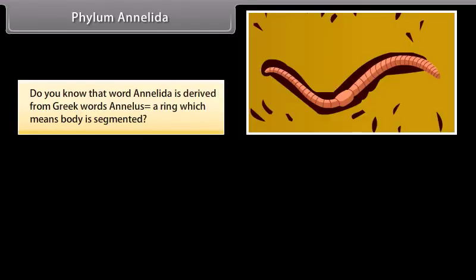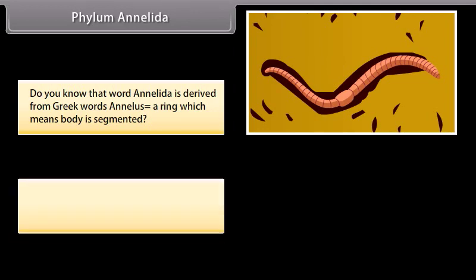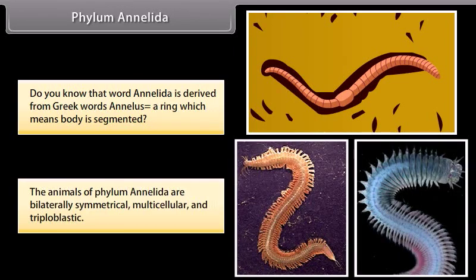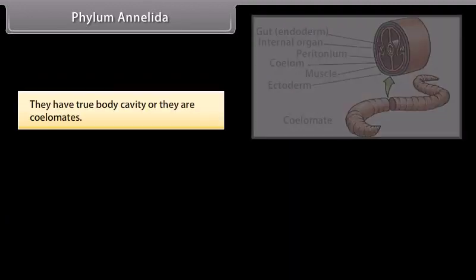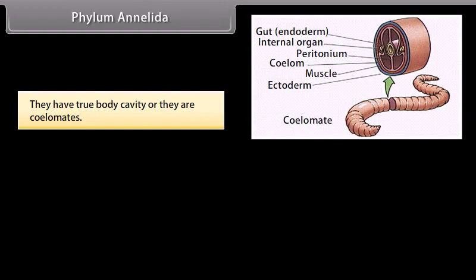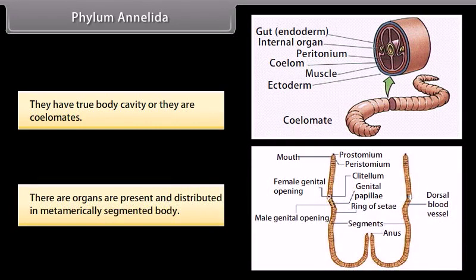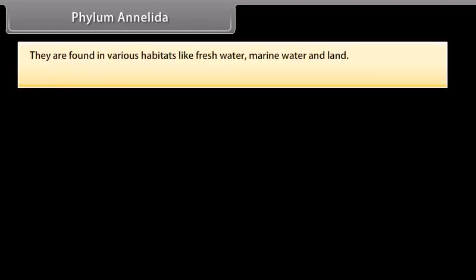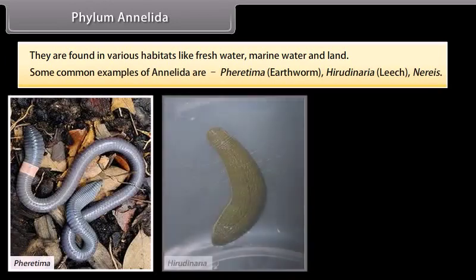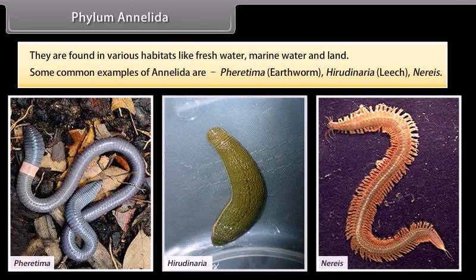Phylum Annelida. The word Annelida is derived from Greek word annilis, meaning ring, which means the body is segmented. The animals of Phylum Annelida are bilaterally symmetrical, multicellular, and triploblastic. They have a true body cavity, or they are coelomates. There are organs present, distributed in a metamerically segmented body. They are found in various habitats like freshwater, marine water, and land. Some common examples of Annelida are Pheretima (earthworm), Hirudinaria (leech), and Nereis.